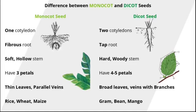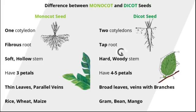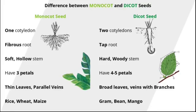The dicot plants have a tap root, which is a long, thick, elongated root having small side roots.